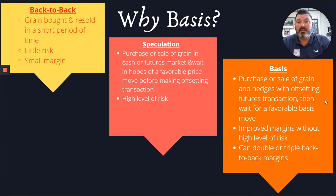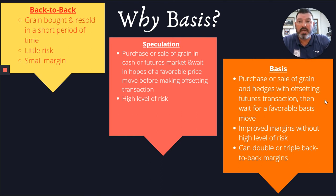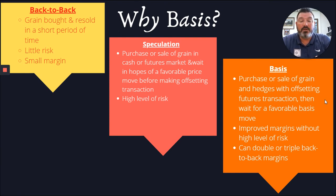So why basis? A couple of different approaches. We could trade in back-to-back fashion — we buy grain and resell in a short period of time. I could buy 1,000 bushels of corn today, turn around tomorrow and sell that same thousand bushels, and whatever price movement occurred between yesterday and today would be my profit margin. It would likely be very small. So there's very little risk, but also very little profit margin possibility.